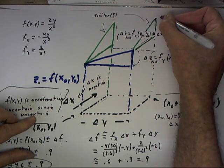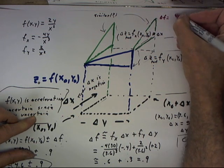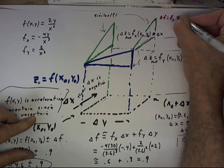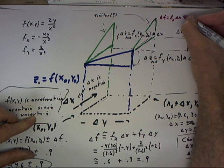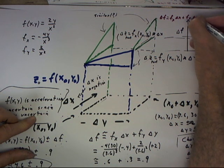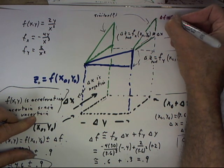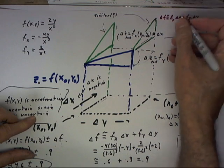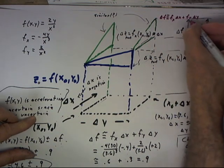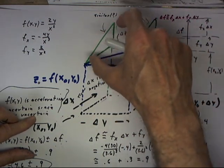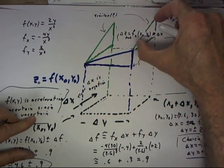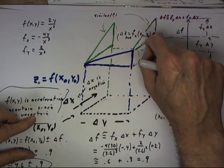What we see here is that delta f equals fx delta x plus fy delta y, and this is not a strict equality. We'll call it an approximation because, of course, this triangle is not necessarily similar to this green triangle.